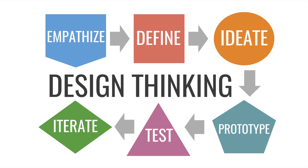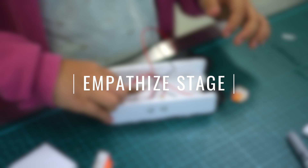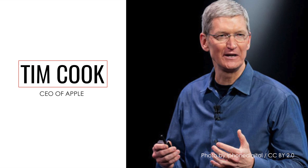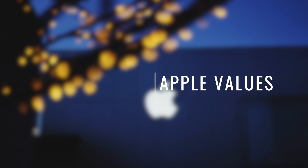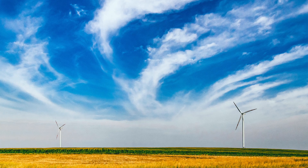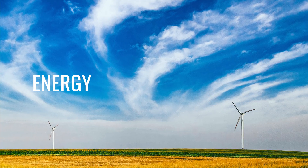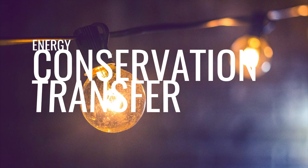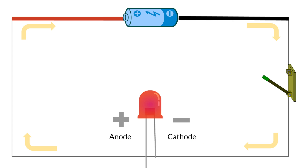Our fourth grade students used the design thinking process to design and build their Apple device. To take on the role of Apple professionals, students gained an understanding of the Apple company's values through a speech given by Tim Cook, the CEO of Apple. They discussed which values would be beneficial to their goal of designing an Apple product. They then gained knowledge in energy, the conservation of energy, and energy transfer by recording themselves drawing and explaining a complete circuit.